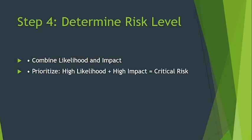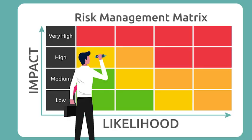Step four is to determine the risk level. You combine your likelihood and impact ratings to calculate the overall risk level. For example, high likelihood plus high impact equals critical risk. This helps you prioritize which risks need immediate action and which need to be addressed first.